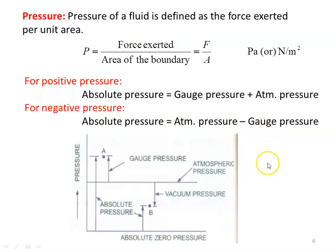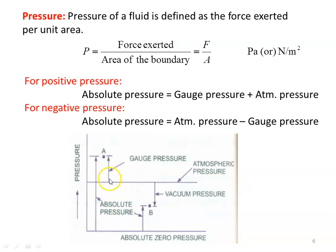This diagram explains the different types of pressure. Taking pressure on the y-axis, the line for atmospheric pressure is shown. Anything below atmospheric pressure is negative pressure or vacuum pressure; anything above is positive pressure. For positive pressure, absolute pressure is the sum of atmospheric pressure plus gauge pressure, where gauge pressure is measured with reference to atmospheric pressure. For negative pressure, absolute pressure is atmospheric pressure minus gauge pressure, referred to as vacuum pressure. Positive absolute pressure, gauge pressure, and atmospheric pressure are the terminologies we need to remember.